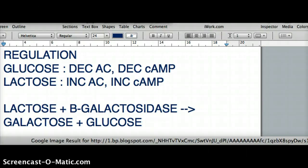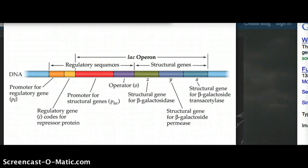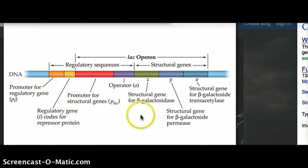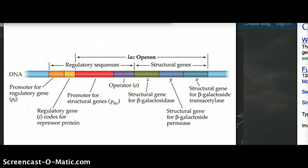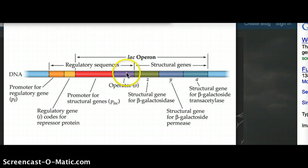Now let's look at a diagram of the lactose operon. This is the DNA, with the regulator gene, promoter, operator, and three structural genes. When glucose is present and there is no lactose, the repressor binds to the operator. With the repressor bound, those structural genes are not stimulated.